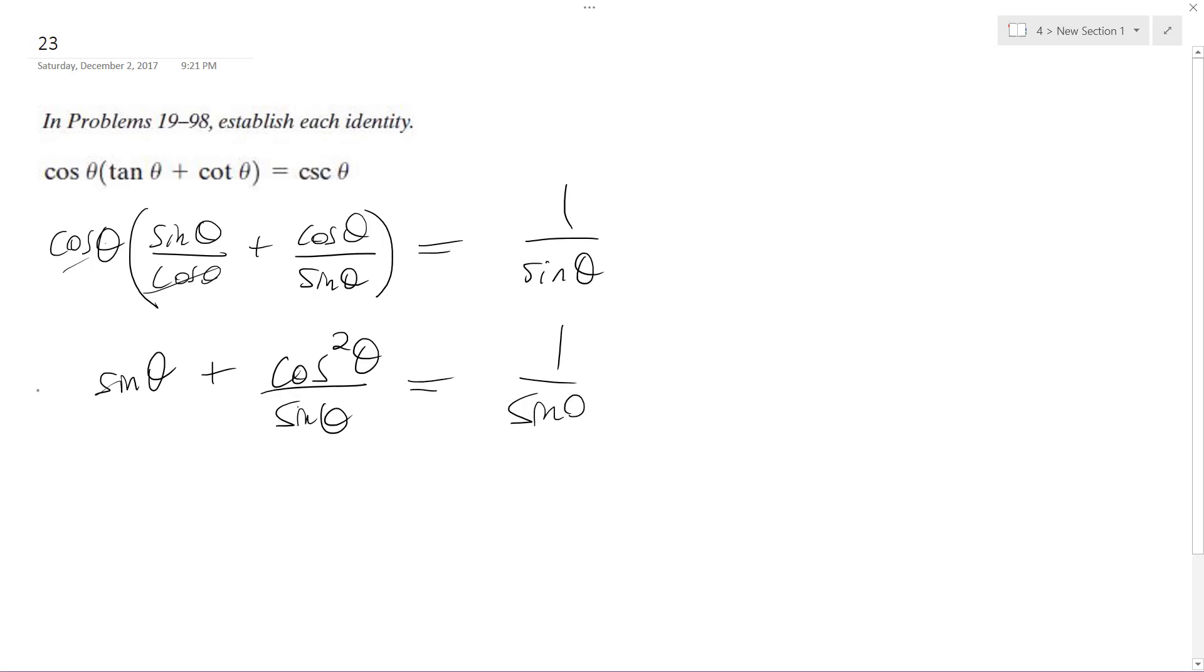So with common denominators, if I multiply top and bottom by sine theta for the left portion, I get sine squared theta plus cosine squared theta all over sine theta.